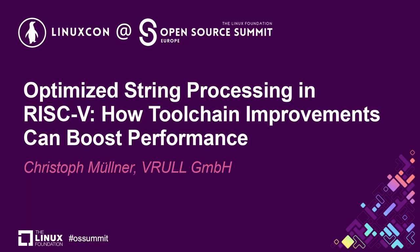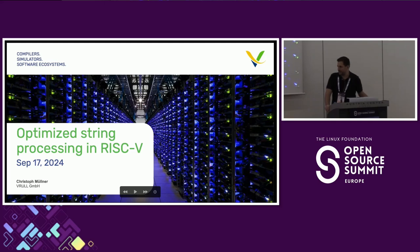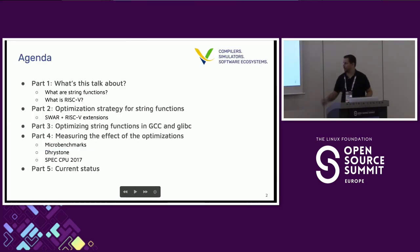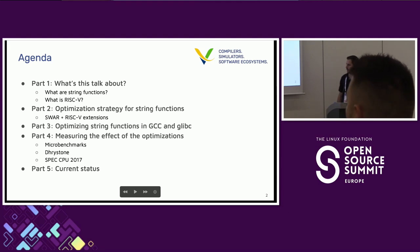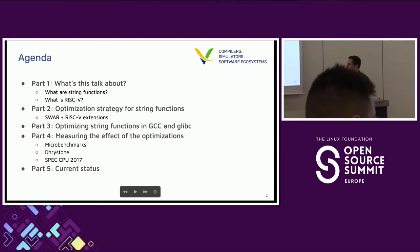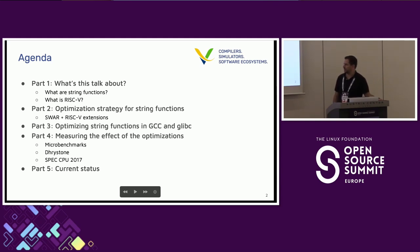Welcome everyone. Today we're going to talk about optimized string processing in RISC-V. The agenda is split into five parts: a quick overview of string functions and RISC-V, a specific optimization strategy for string functions in RISC-V, how we implement this strategy in GCC and GLIBC, measuring the effect of the optimizations, and showing the current status of upstreaming.